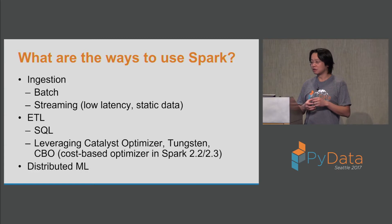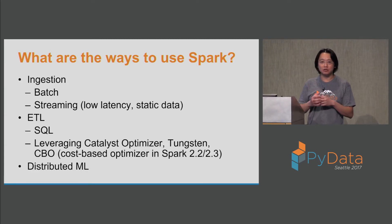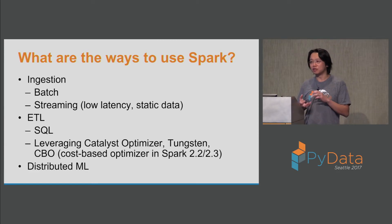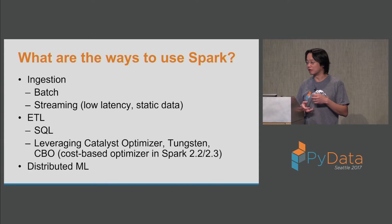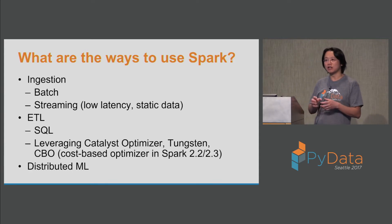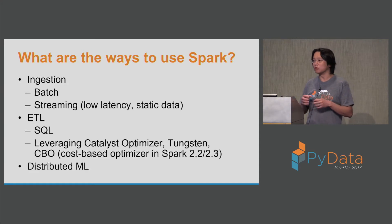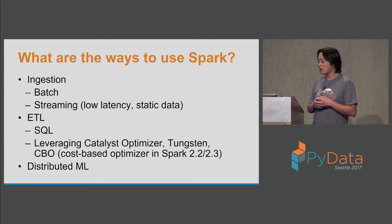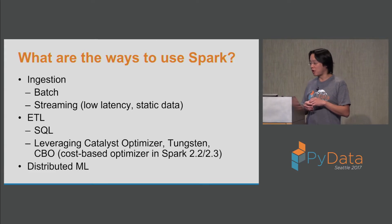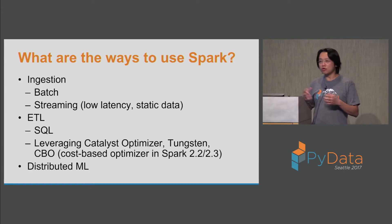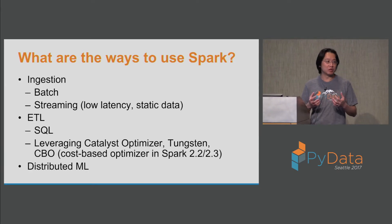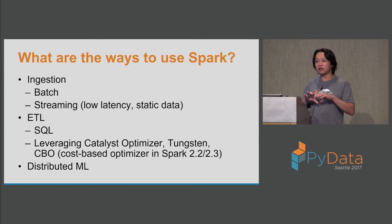There are many ways to use Spark. You could be ingesting data from a messaging system like Kafka or reading from storage. You could take this data and pass it through some sort of ETL process using SQL or DataFrame transformations. You can leverage the Catalyst Optimizer, including CBO which is new in 2.2 and 2.3. Or you could pass it through to a distributed machine learning pipeline. We're going to focus on that last part and talk about two high-level approaches.